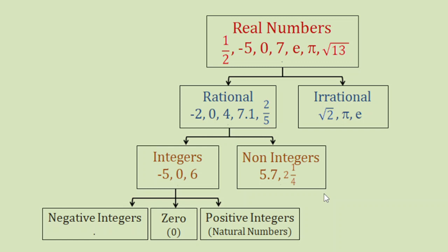Now, seeing the whole diagram, aside from saying that negative integers, 0, and positive integers are subsets of integers, we can also say that negative integers, 0, and positive integers are subsets of rational numbers, and also subsets of real numbers. And also, aside from saying that integers and non-integers are subsets of rational numbers, we can also say integers and non-integers are subsets of real numbers.